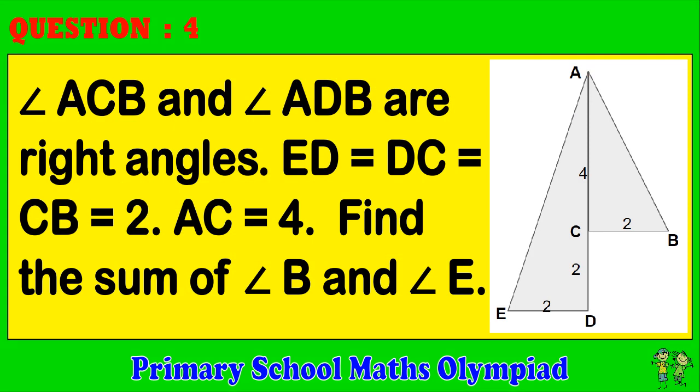Question 4: Angle ACB and angle ADB are right angles. ED equals DC equals CB equals 2. AC equals 4. Find the sum of angle B and angle E.